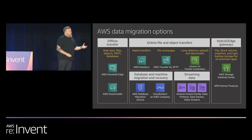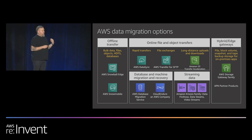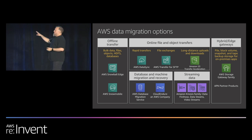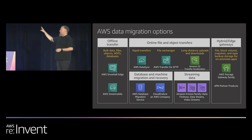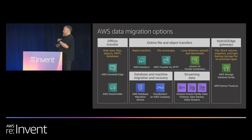At AWS we've thought about all of these things. What we have falls into roughly two broad categories: offline data transfer with the Snow family, and online transfer with things like CloudEndure, Storage Gateway, and AWS DataSync. We'll also touch on streaming data and hybrid edge gateways. We give you a lot of options to move data — online or offline — in large amounts and very quickly.